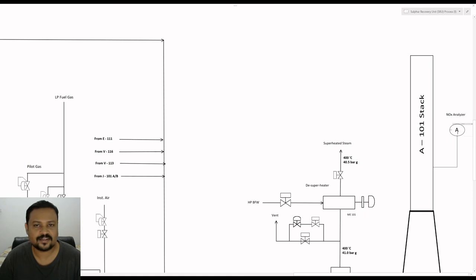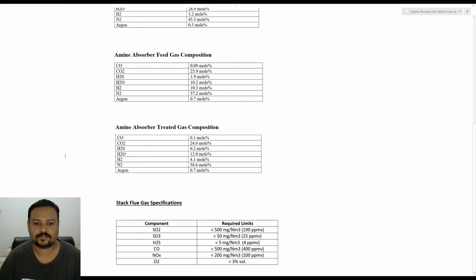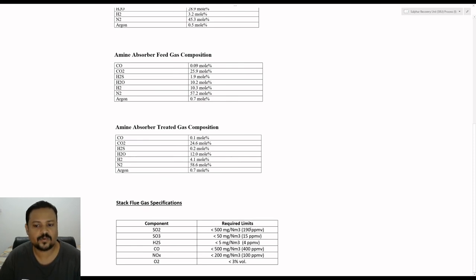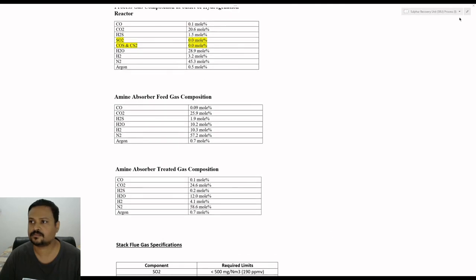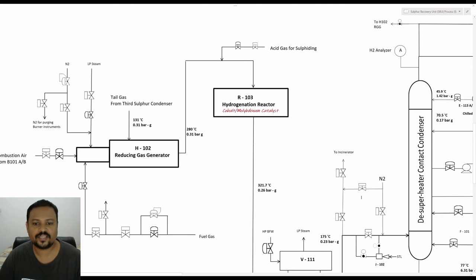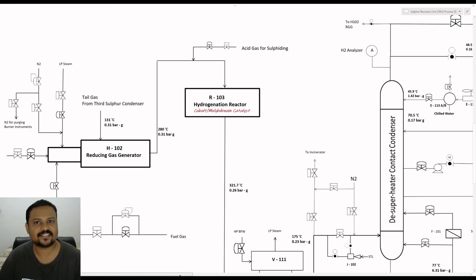There is also a NOx analyzer. From the stack flue gas specification: sulfur dioxide requirement is below 500 mg/Nm³, SO3 is about 50 mg/Nm³, H2S is less than 5 mg/Nm³, and NOx is less than 200 mg/Nm³. That was all about the BSR section.